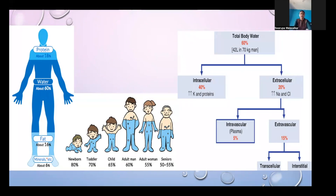The extracellular compartment is further divided into intravascular and extravascular spaces. For general maintenance of hydration, it is necessary for fluid to distribute into all compartments. If the aim is to improve tissue perfusion by raising intravascular volume, it is important for fluid to stay within the intravascular space. This concept helps us understand why different fluids are available and for what purpose.